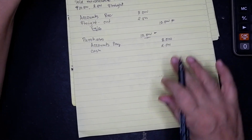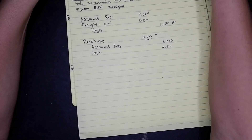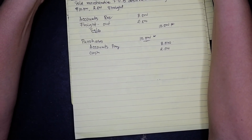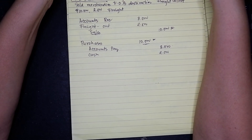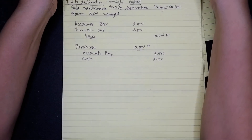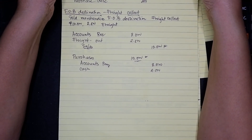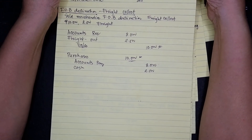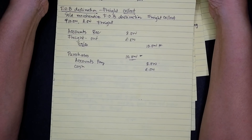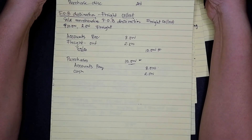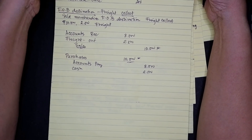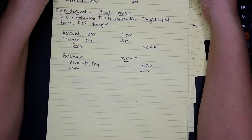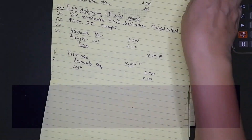For our next video, that will be an illustrative problem on how to journalize transactions for a merchandising concern.